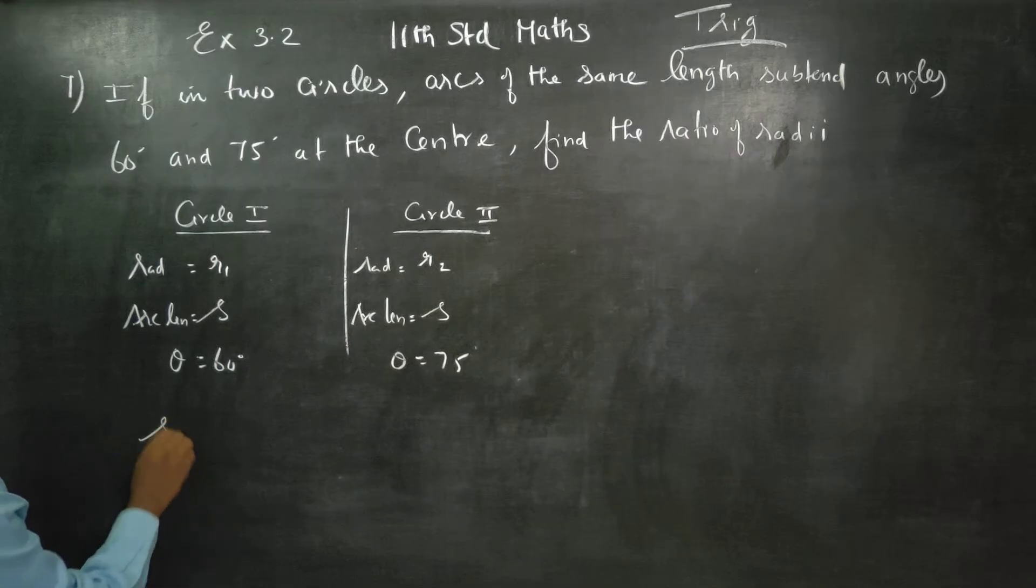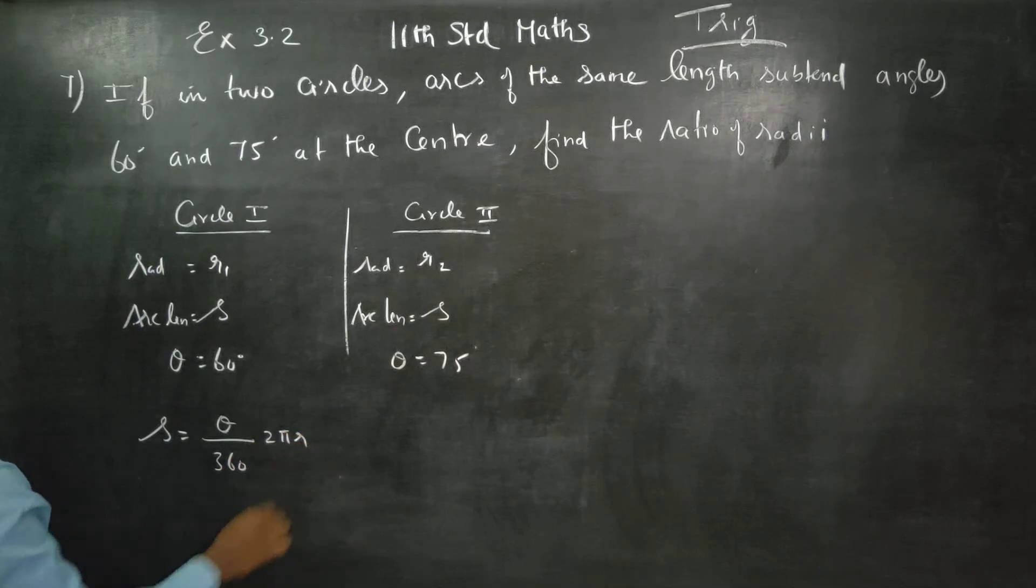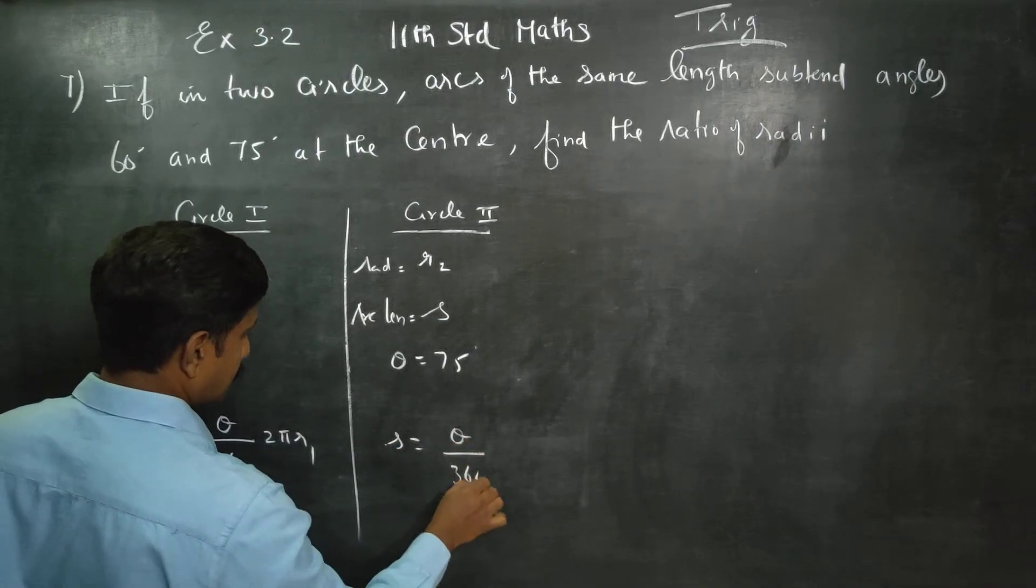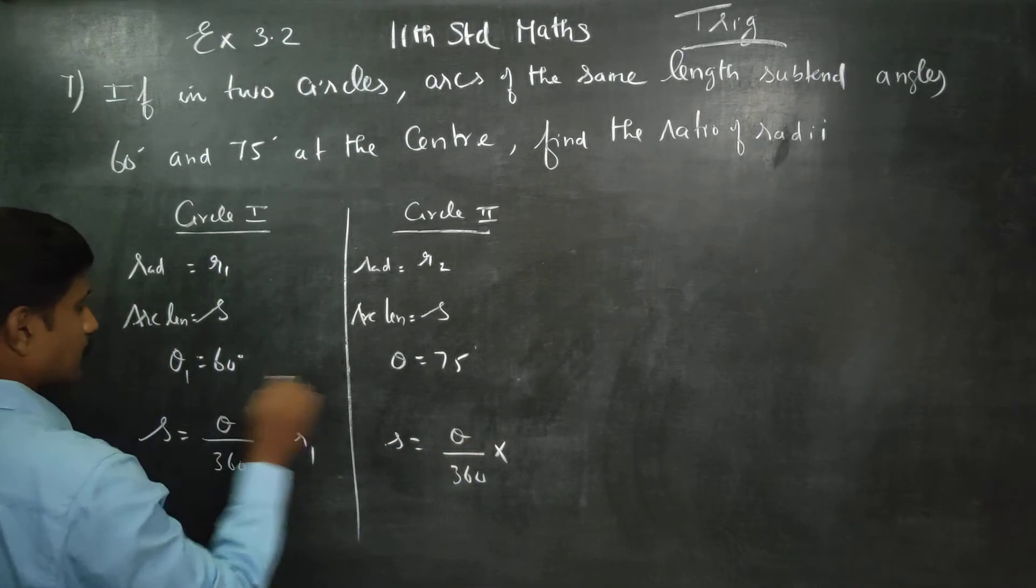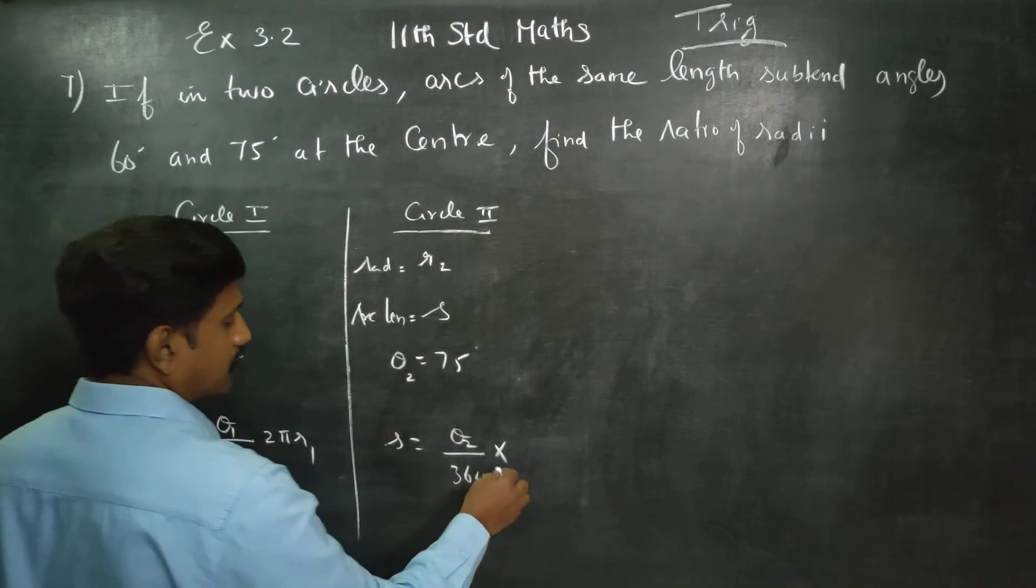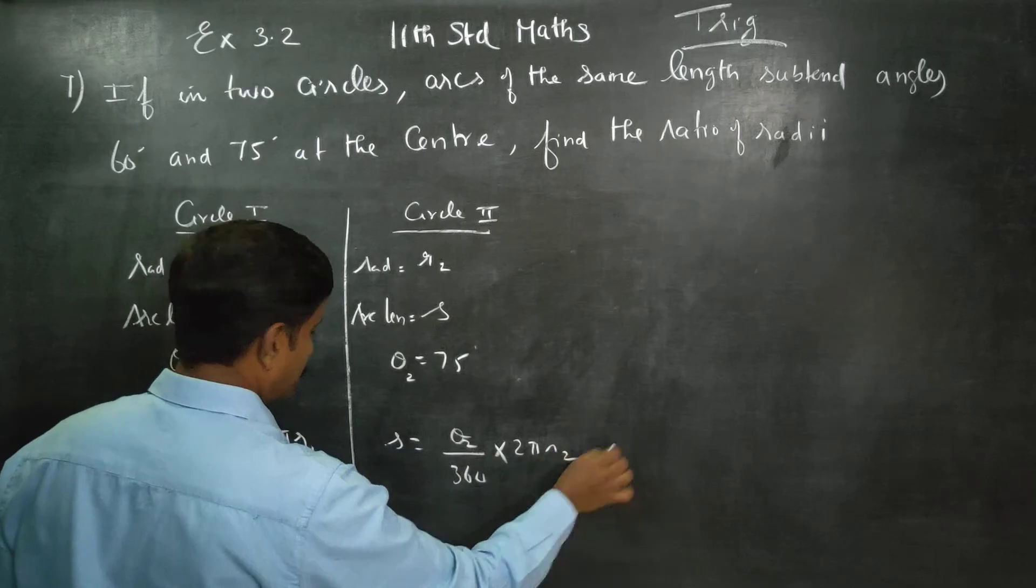Now I'm going to use the formula S equals theta by 360 times 2 pi r. For circle 1, S equals theta by 360 into 2 pi r1. For circle 2, S equals theta by 360 into 2 pi r2.